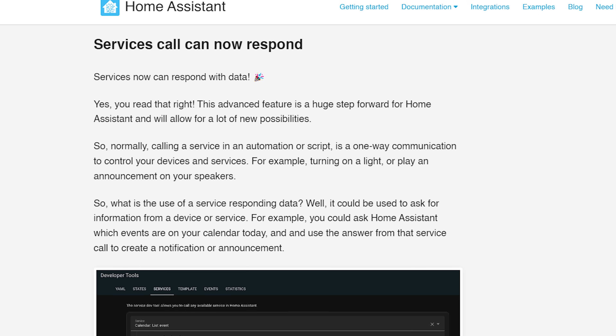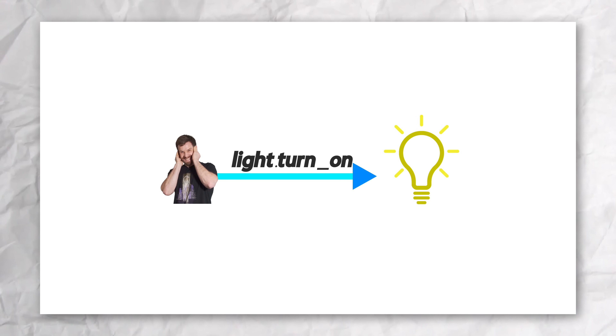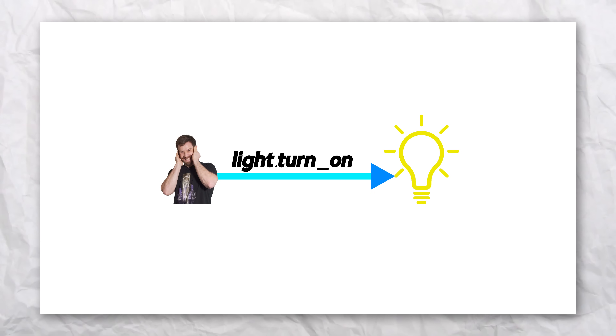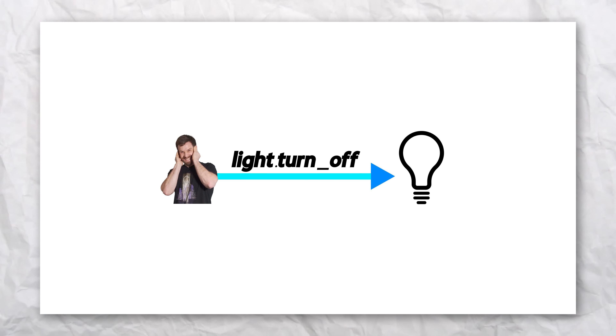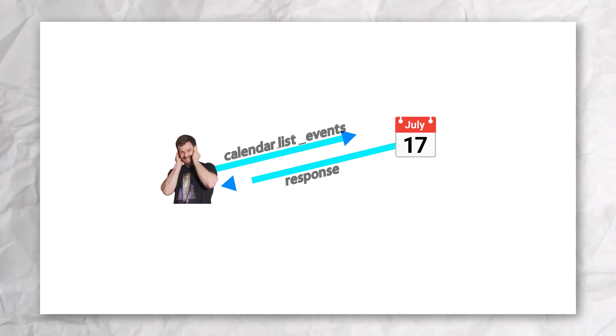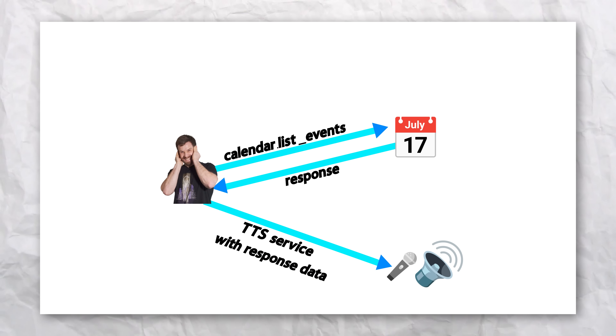There is so much more, and a big one — though a little more advanced — is that service calls can now respond with information. Typically when you call a service in an automation to turn on a light, close a blind, or arm an alarm, those are one-way calls. You tell the service to do something and it just does the action. This release changes that by adding the ability for services to respond with data which you can then use to do something else.